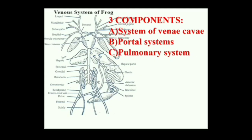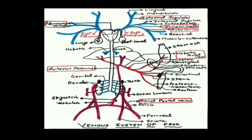There are three vena cava in the frog's body — two precavals, also called anterior vena cava, and one postcaval, also called posterior vena cava. They all open into the sinus venosus, the accessory chamber of the heart, which receives all deoxygenated blood from the entire body and supplies it to the right auricle. In the diagram, blue colored vessels are precavals, the large black one is postcaval, and red and pink colors indicate portal systems.